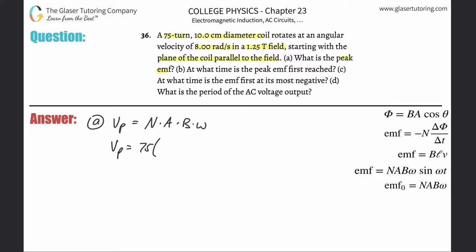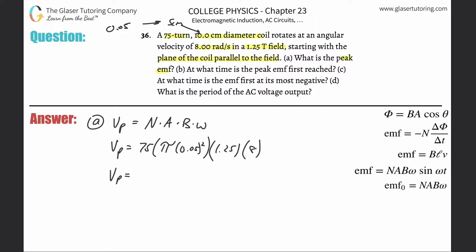It's a circle, so the radius is half the diameter: five centimeters, which converts to 0.05 meters. The area is π times the radius squared: π × (0.05)². Magnetic field strength is 1.25 tesla, and angular velocity is 8 radians per second. So: 75 × π × (0.05)² × 1.25 × 8.